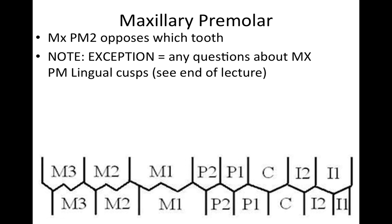The mandibular first premolar — the buccal cusp of the mandibular first premolar contacts which anatomical feature of which tooth? It's going to be contacting the mesial marginal ridge of the first premolar. We could also say the distal marginal ridge of the canine.